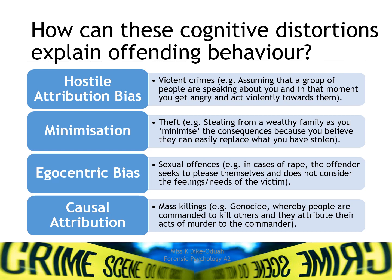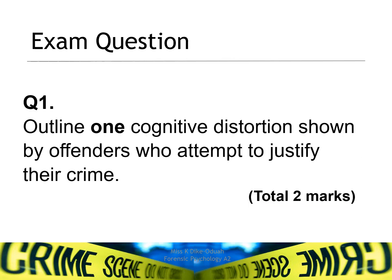For causal attribution, mass killings and genocide can be explained by instances whereby people are acting under the command of someone else. They don't see themselves as responsible for the crime they're committing — they attribute it to something external, so they have an external locus of control. There's one exam question here: two marks — outline one cognitive distortion shown by offenders who attempt to justify their crime. Using the previous slide, you can pick any cognitive distortion and provide a small example.